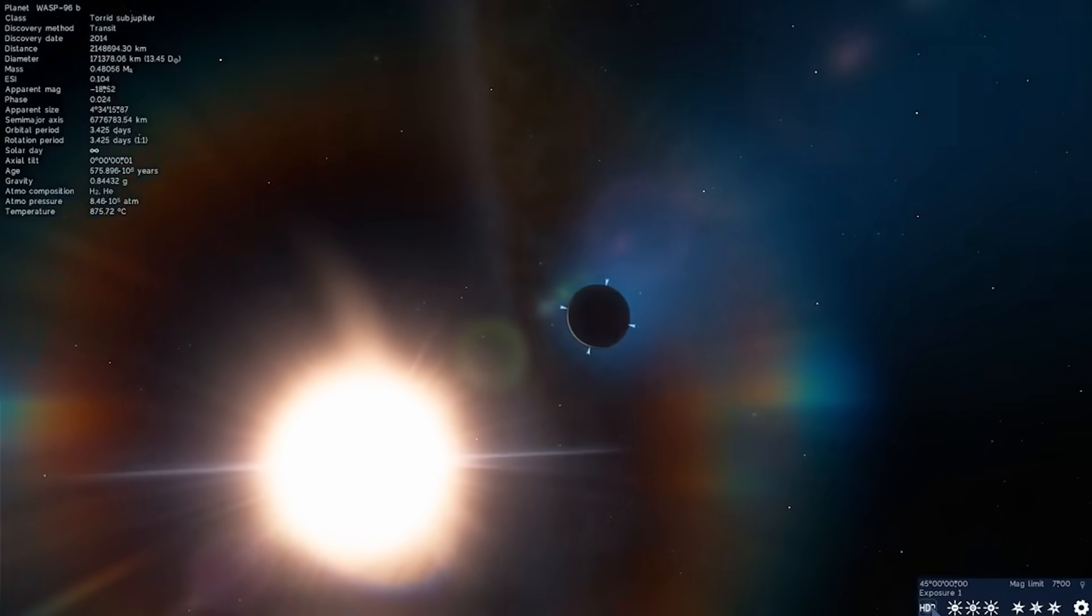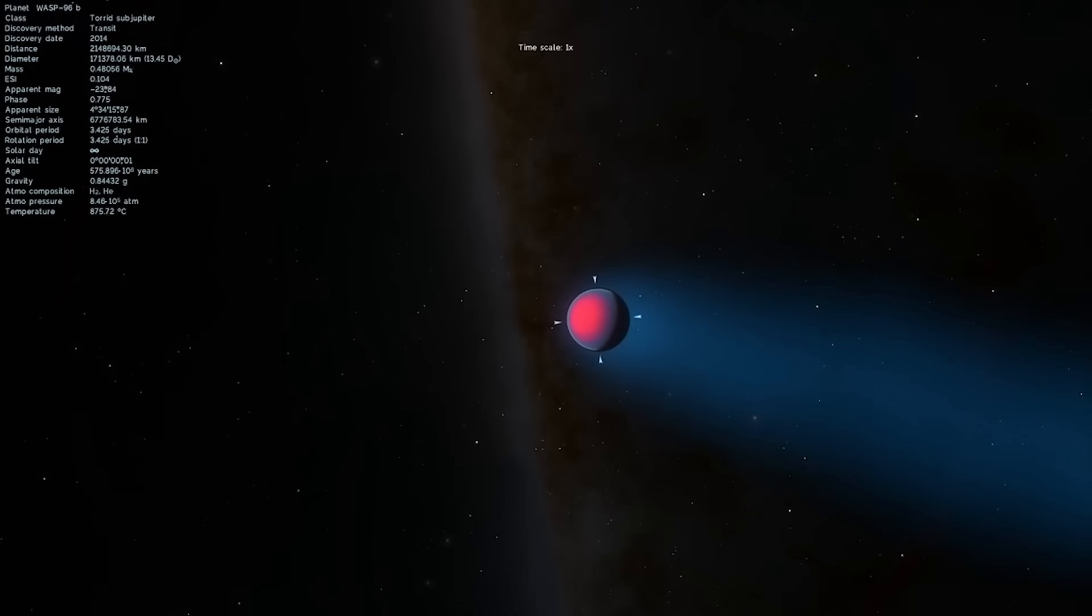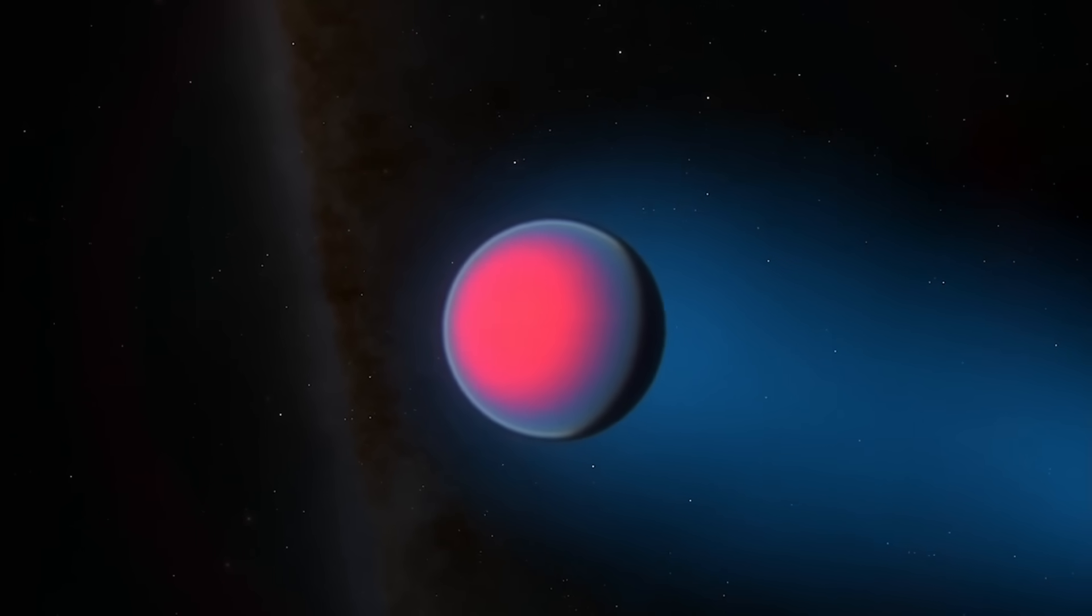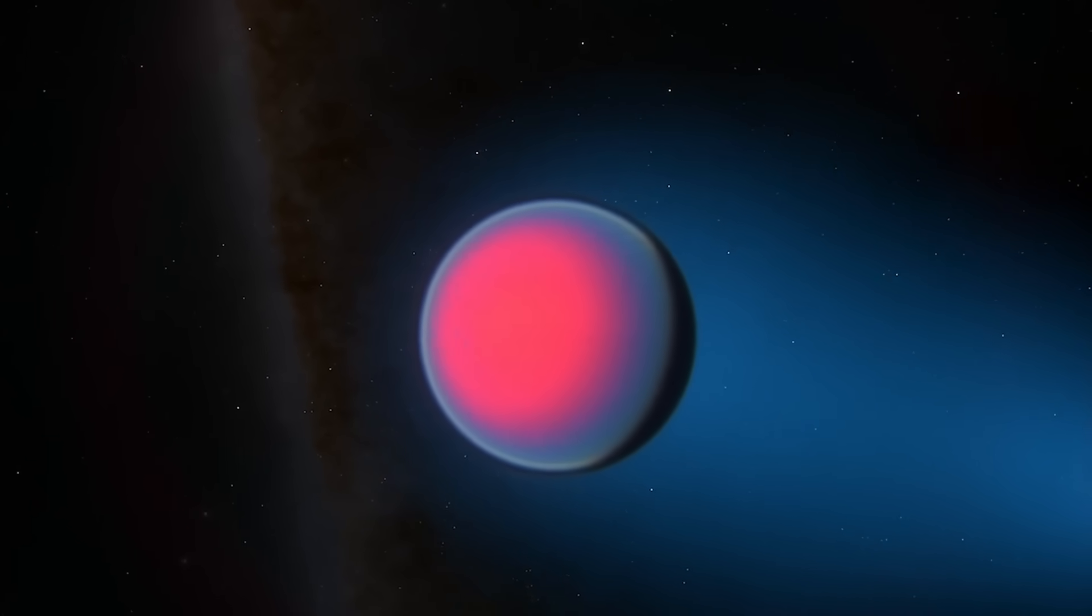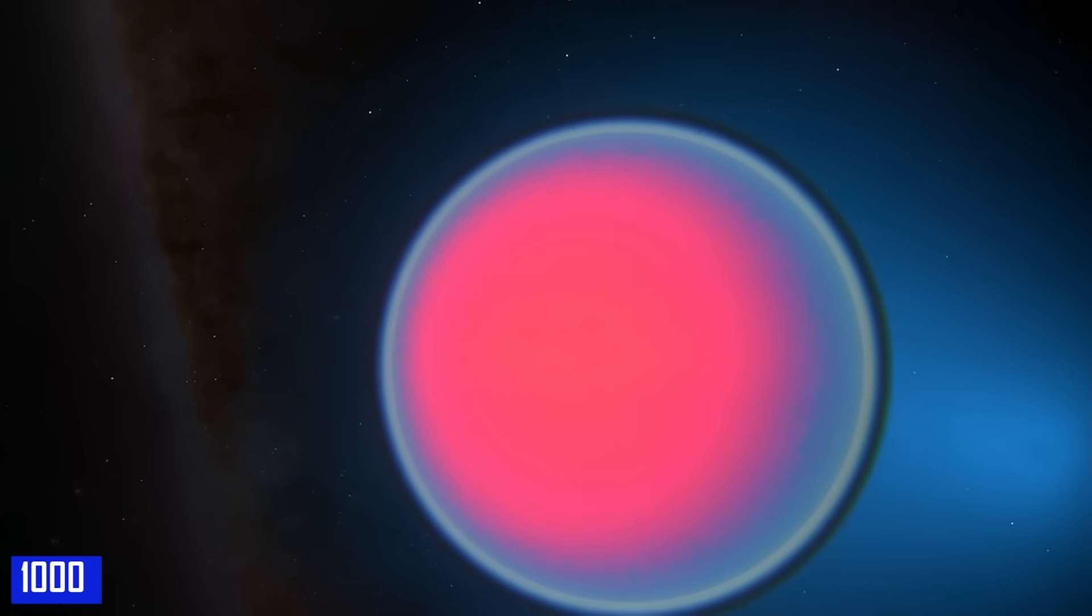WASP-96b is significantly puffier than any other planet orbiting our sun, with a mass less than half that of Jupiter and a diameter one or two times greater. It is also noticeably hotter, with a temperature of more than 1,000 degrees Fahrenheit.